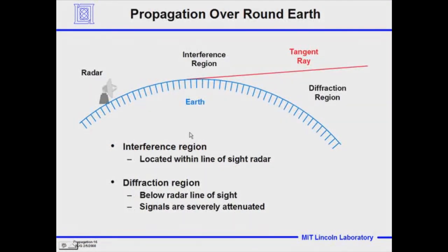Now let's look at some geometry. On a curved Earth, the area between the radar and the tangent ray to the horizon — above the line-of-sight path from the radar to the horizon — we call the interference region. A target up there can have a direct path and a multipath that bounces down. But the area below that tangent ray from the radar to the line of sight we call the diffraction region. Signals in the diffraction region are severely attenuated, but there is some detection.